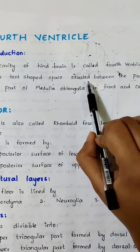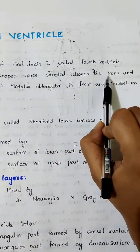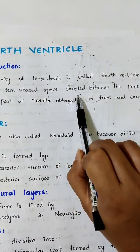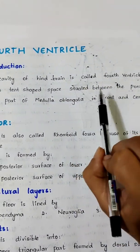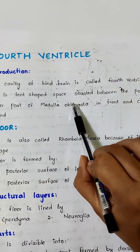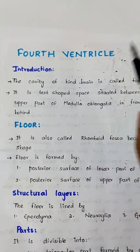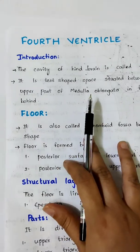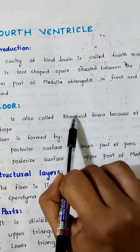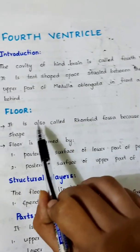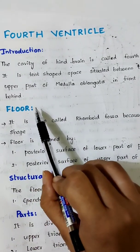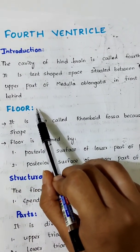Remember the pons and medulla — together they relate to what we call the 4th ventricle. Now let's go to the floor. The floor is also known as the rhomboid fossa, because of its rhomboid shape.